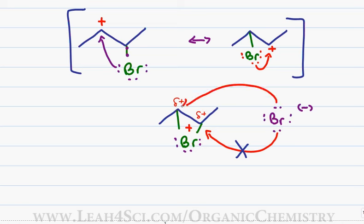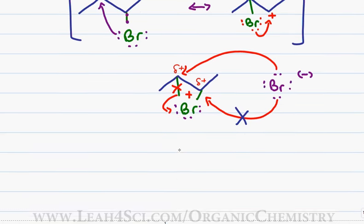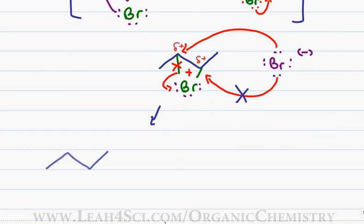Bromine instead is forced to come and attack from the other side of the molecule breaking one of the bromine bridges and collapsing those electrons onto the bromine atom. This now gives me a final product where the first bromine is on the right and the second bromine to attack is on the left.